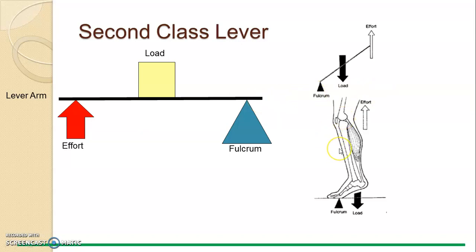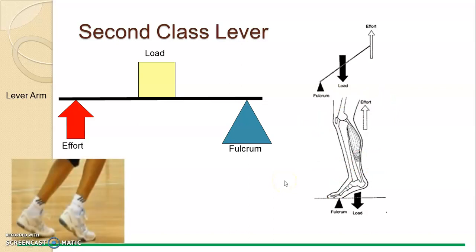In the body, the second class lever is demonstrated when you go on your tiptoes. The fulcrum is the balls of your feet and toes, the load is the weight of the leg, and the effort comes from the gastrocnemius at the back contracting to maintain that plantar flexion. Sporting examples include the ready position at the start of a badminton match, or taking a free throw in basketball on tiptoes to gain maximum height.